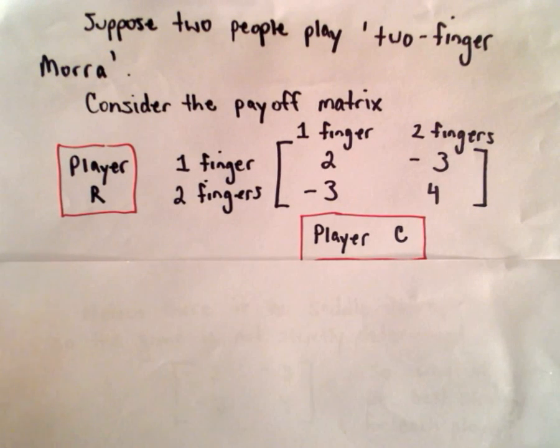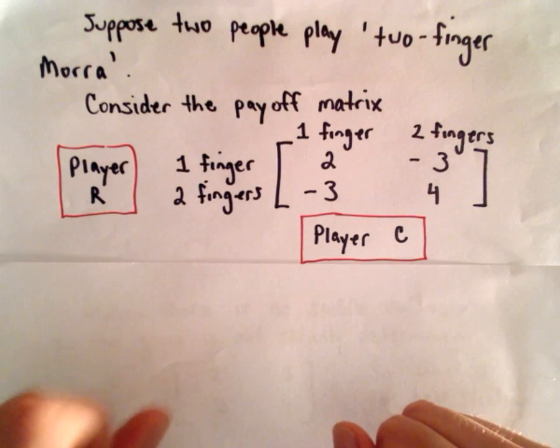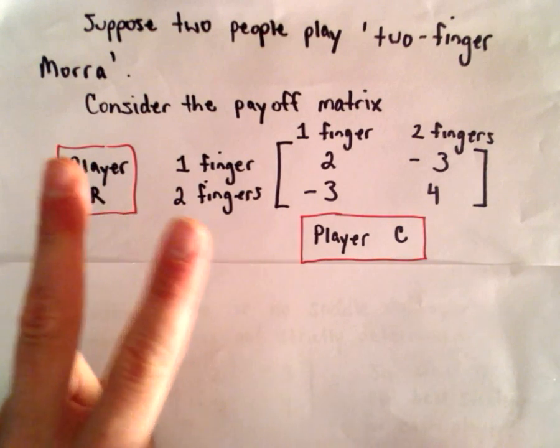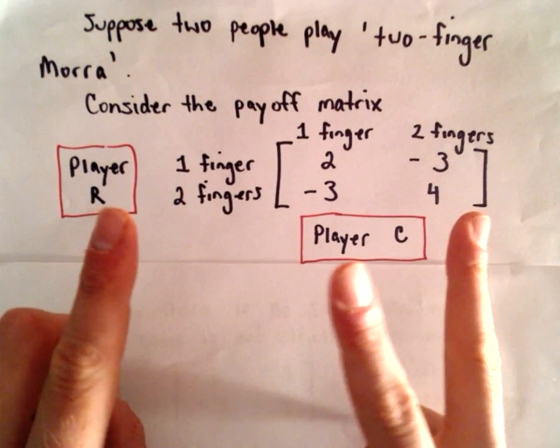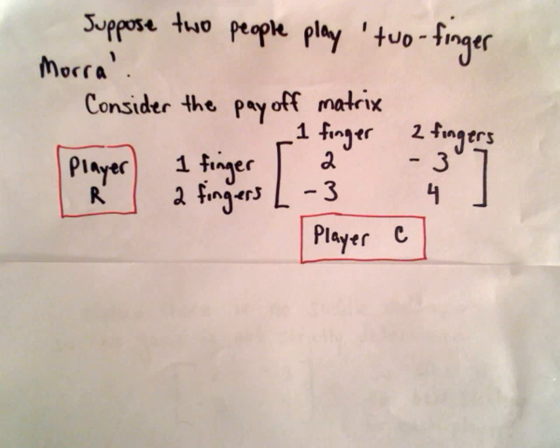So let's start with an example. Suppose two people play what's called two-finger Morra. And there's variations on this, but the basic idea is it's almost like playing rock, paper, scissors, but instead of rock, paper, scissors, you'll either show one finger or two, and the other person will do the same thing. And basically depending on the fingers that you show and your opponent shows, you agree to some sort of payoff.